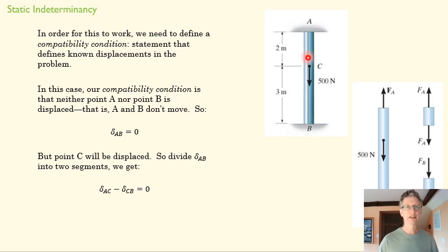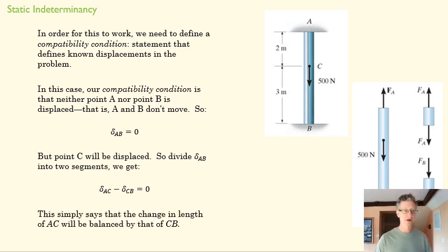Because let's say this, assuming this gets longer, so it's going to have a positive change, this one is going to have a negative change, okay? And that's why we have that negative sign there. And those are going to have to sum up to zero. So that's our extra equation that's going to allow us to solve this problem.